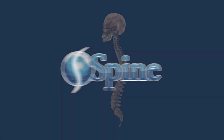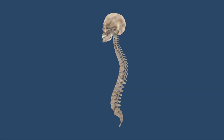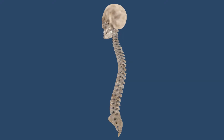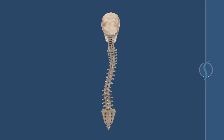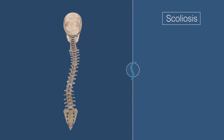The spine has a natural curvature shaped like an S when viewed from the side. The neck and lower back regions are C-shaped, while the middle chest region has a reversed C-shape. When viewed from the back, the spine appears straight. An abnormal curvature in this plane with rotation of the vertebrae is called scoliosis.